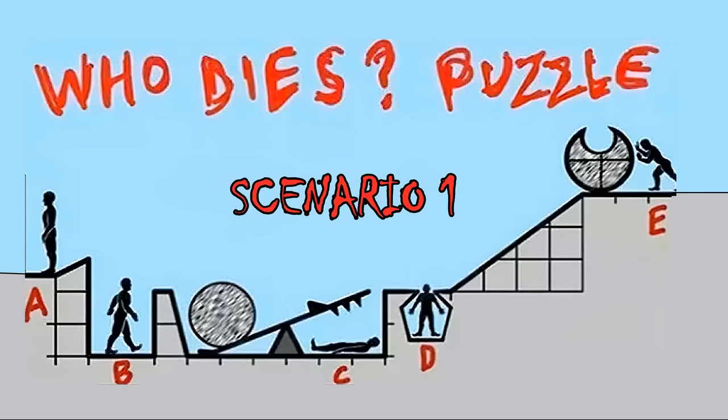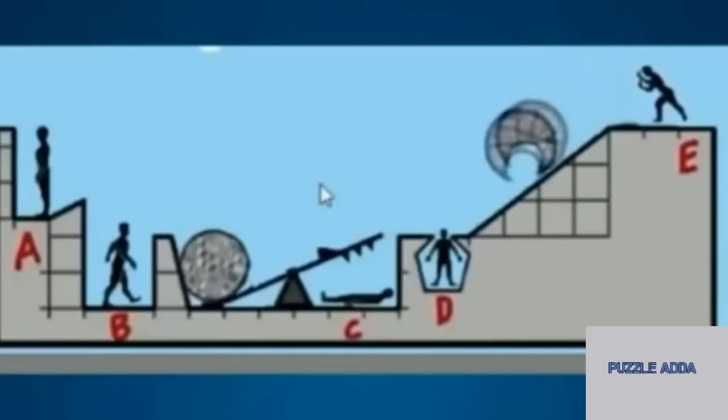Scenario 1: Only 1 person dies, which is marked as D.